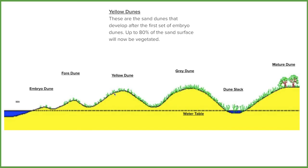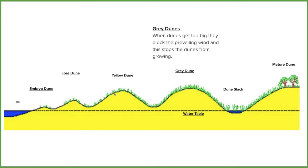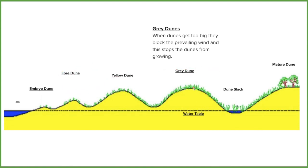Then we get to grey dunes. We're now starting to get more static dunes — these aren't going to build up as much anymore, and they won't have any sand visible. The dunes are getting so big that they start blocking the prevailing wind from reaching further inland. They're completely covered by vegetation, which means quite a lot of nutrients are being developed — so we get more fragile vegetation, more like what we'd find inland from the sea.